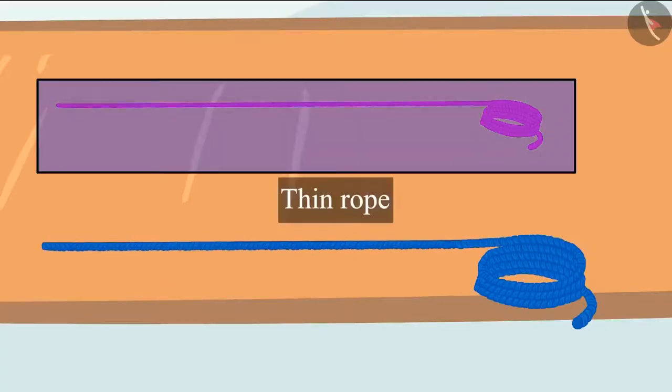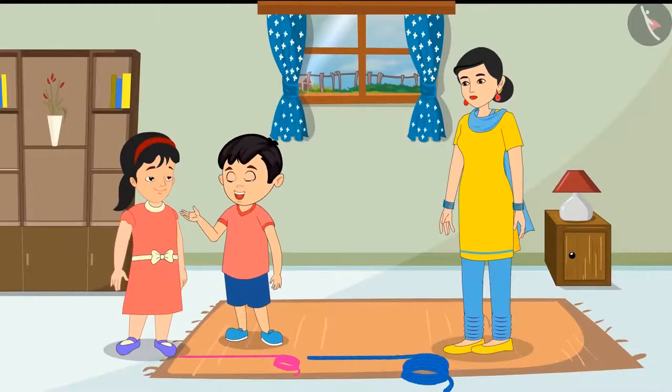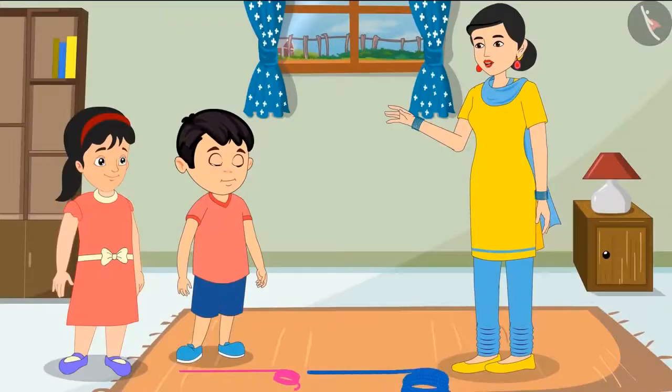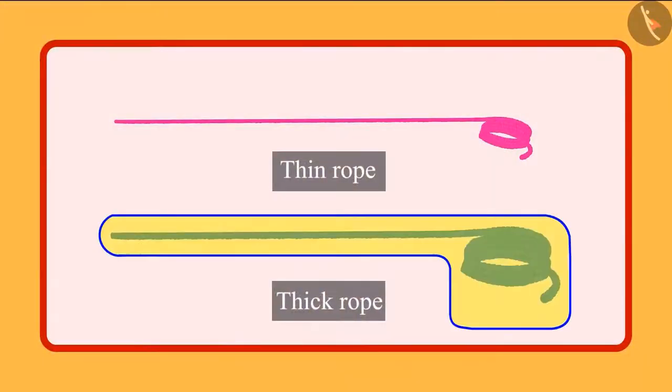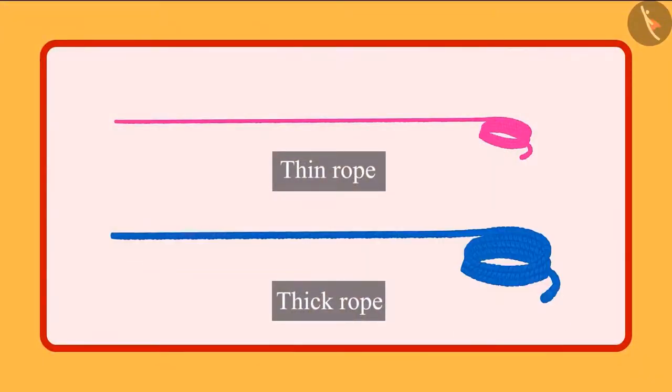Children, this rope is thin. If you make a swing with it, the swing will break as soon as you sit on it. Really mummy, what should we do now? Children, you should make a swing with this thick rope. It won't break when you sit.